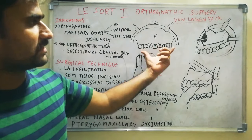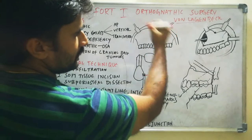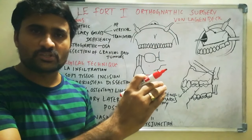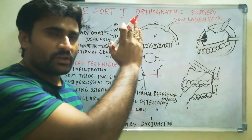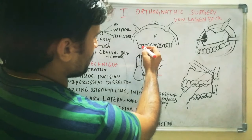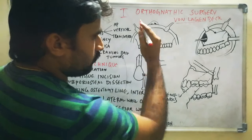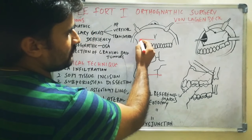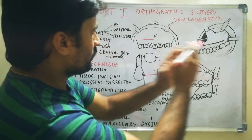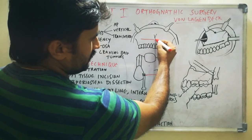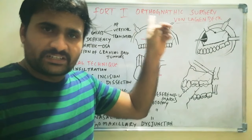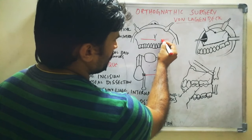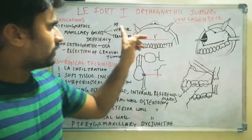After that, soft tissue incision is performed. The incision is given in the maxillary vestibule, 4 to 5 mm above the mucogingival junction, from one side first molar to the other side first molar. You can start from the posterior end and move anteriorly. In the midline, keep the incision as a V-shape so that we can detect the midline area when suturing post-procedure.